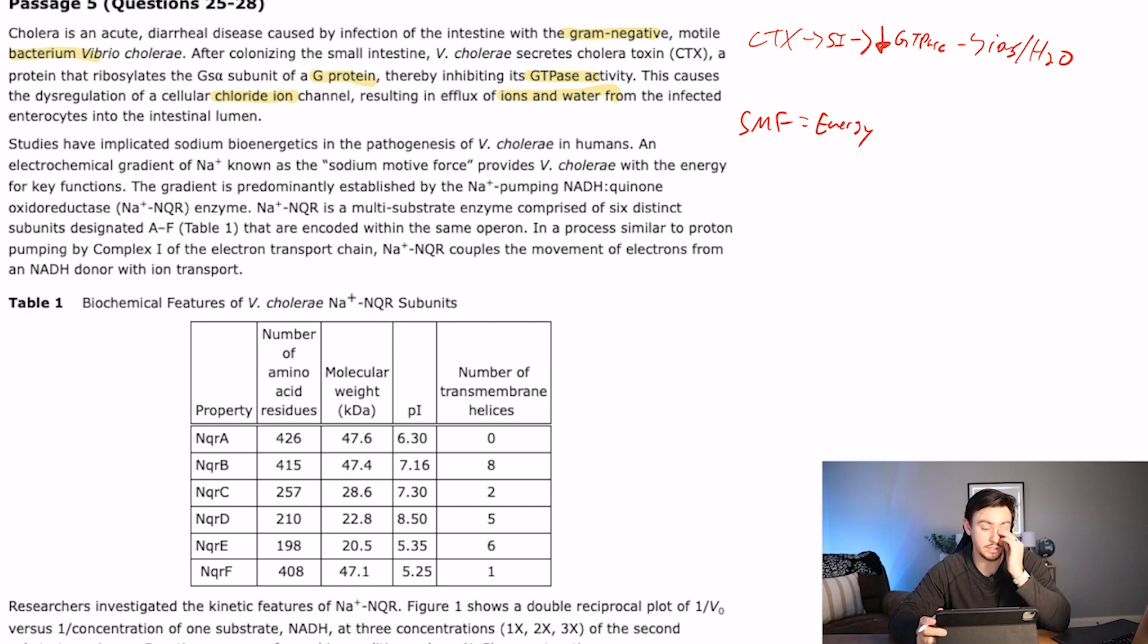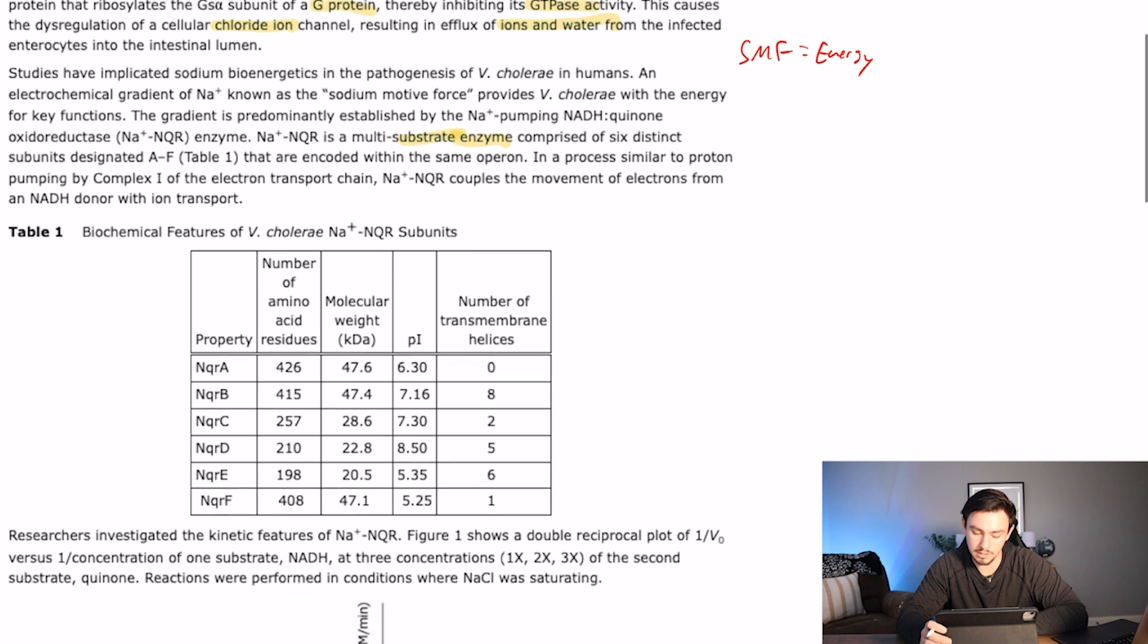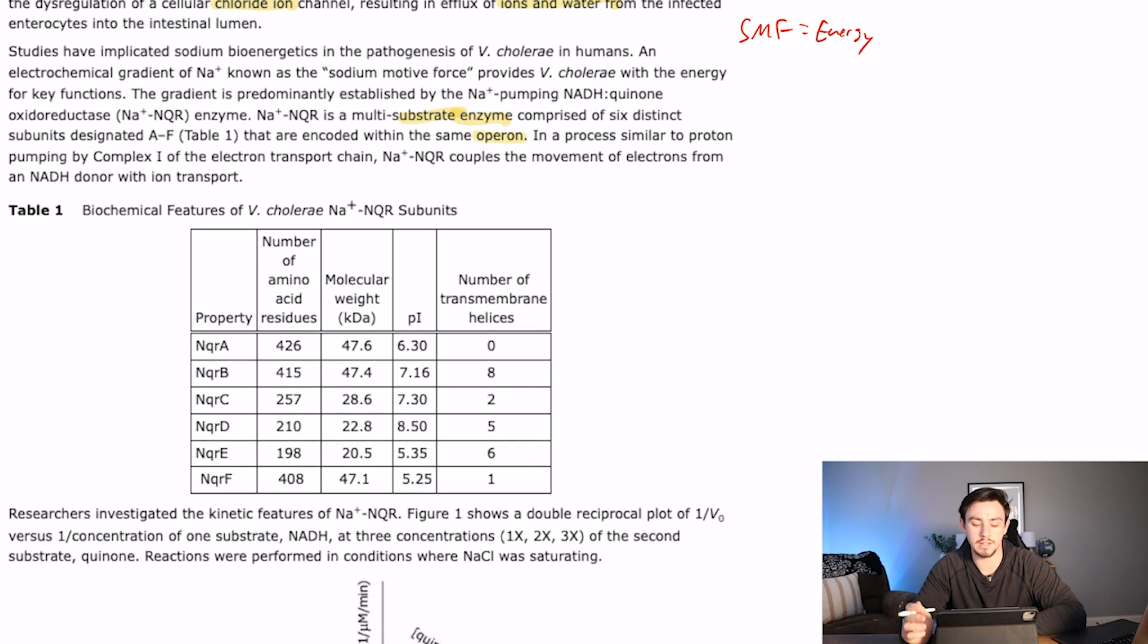The gradient is predominantly established by sodium pumping, NADH, quinone oxidoreductase, which they're going to call sodium NQR enzyme. Sodium NQR is a multisubstrate enzyme, so enzymes that's high-yield substrates, comprised of six distinct subunits, which are in table one, that are encoded within the same operon. Operon's high-yield science. In a process similar to proton pumping by complex one.